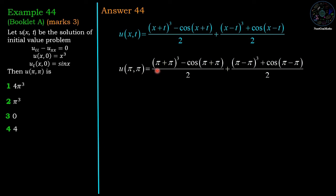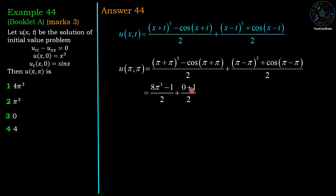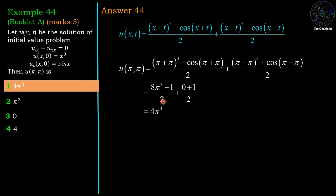We have u(π, π) equals ((π+π)³ minus cos(π+π)) over 2, plus ((π−π)³ plus cos(π−π)) over 2. Now cos(2π) equals 1 and cos(0) equals 1. So we get (8π³ minus 1) over 2 plus (0 plus 1) over 2. The minus 1 and plus 1 cancel, giving 8π³ divided by 2, which equals 4π³. This is the first option and is the correct answer.